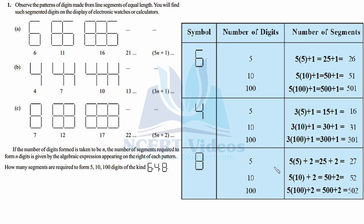For digit 8, the algebraic expression is 5n + 2. For 5 digits: 5×5 + 2 = 27 segments. For 10 digits: 5×10 + 2 = 52. For 100 digits: 5×100 + 2 = 502. So in such day-to-day problems, algebraic expressions are very helpful.